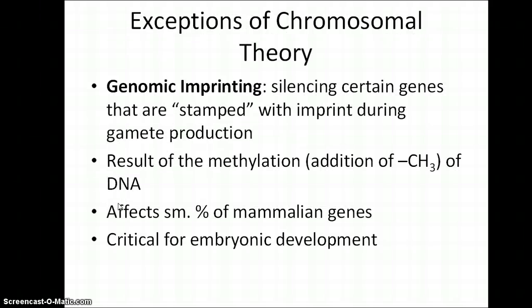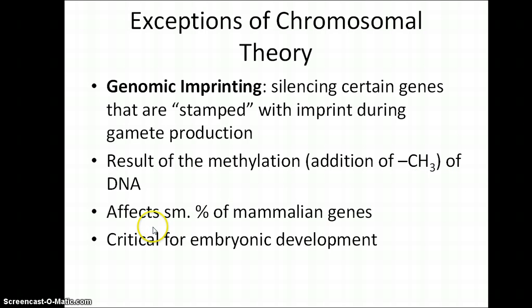Genomic imprinting is a fascinating example of what can happen early on in development. With imprinting, certain genes are switched off — stamped — when eggs and sperm are being produced. This happens when a methyl group attaches to the DNA; when the DNA is clamped down by this methyl group, that gene can no longer be transcribed and translated into a protein, so it is effectively shut down. This is rather rare in mammals — only maybe a couple of dozen genes in humans — but these genes are certainly critical for embryological development.